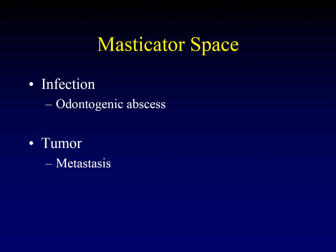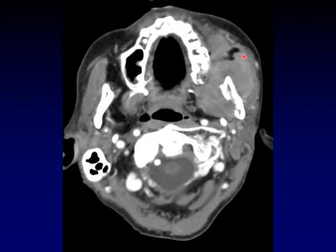There are many different types of tumors; metastases are quite common. Here's an example of a mass arising within the masticator space. You can see how it is pushing on the parapharyngeal fat posteromedially. This has a very mass-like appearance, but it turned out to be a chronic infection.